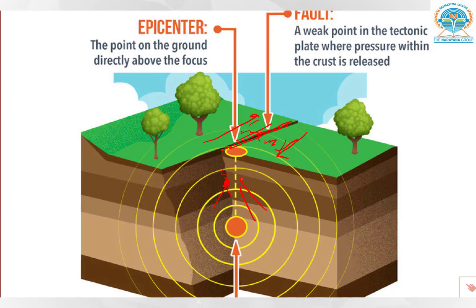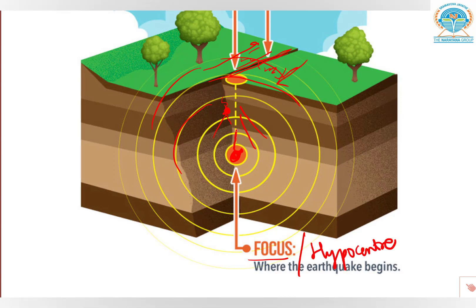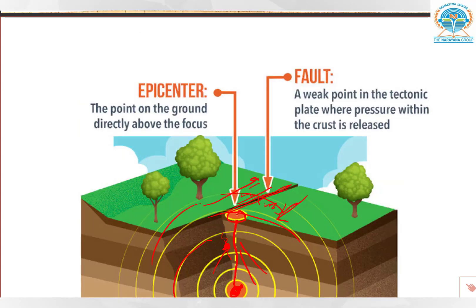Endogenic process means the reasons are coming from inside the earth. There is so much release of energy traveling in all directions. When an earthquake happens, the point where the energy is released is called the focus, also known as the hypocenter. The point nearest to the focus but on the surface of the earth is called the epicenter — this is the first point to experience the earthquake wave and it spreads in all directions.